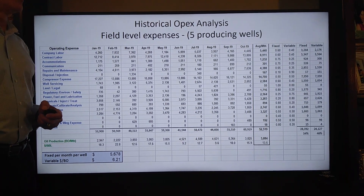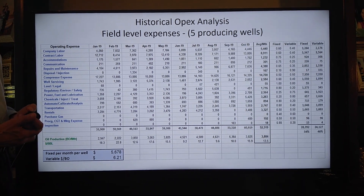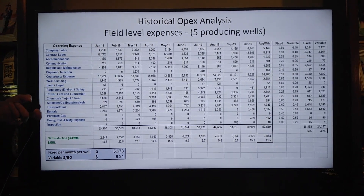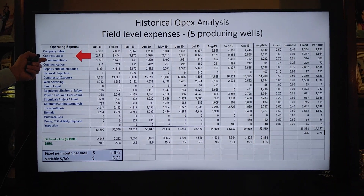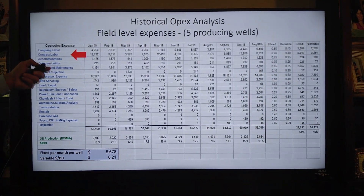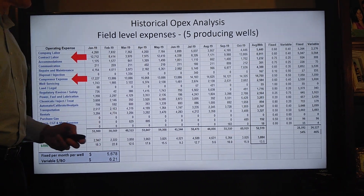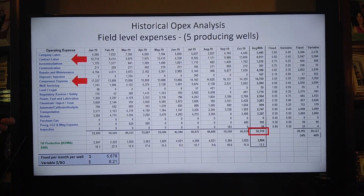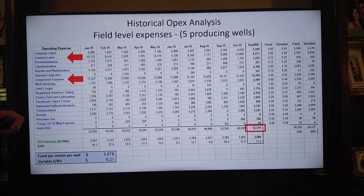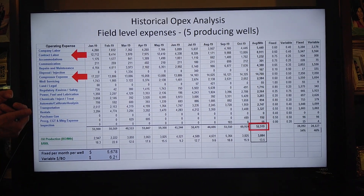Here's an example of historical operating expense data from an operator, but it's at the field level. They don't have operating expense broken down by well — just a total for the field. We know there are five producing wells in this field, and we have about 10 months of data. Categories include contract labor and compressor expense, which are both significant. You have to analyze all these categories and check if they're consistent. The total field expenses average $52,000 per month, so with five wells, that works out to about $10,000 per well per month — which would be considered all fixed costs.